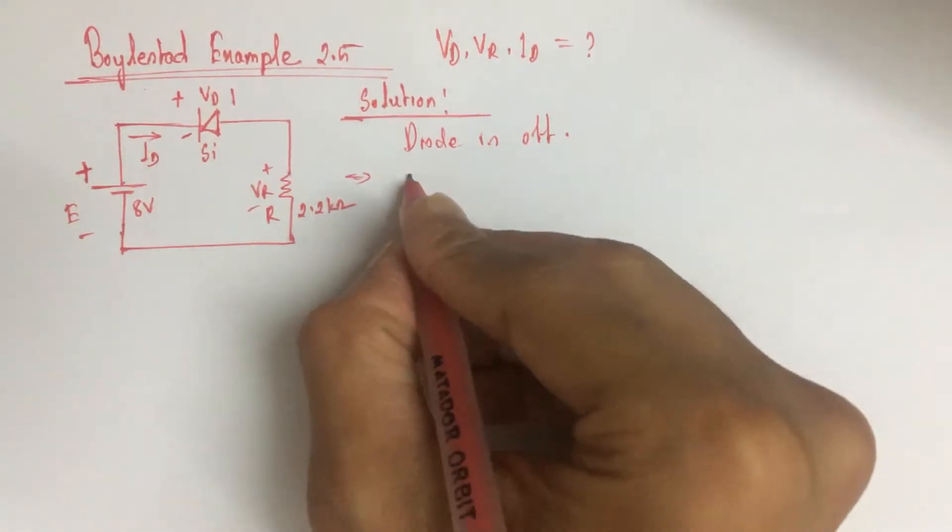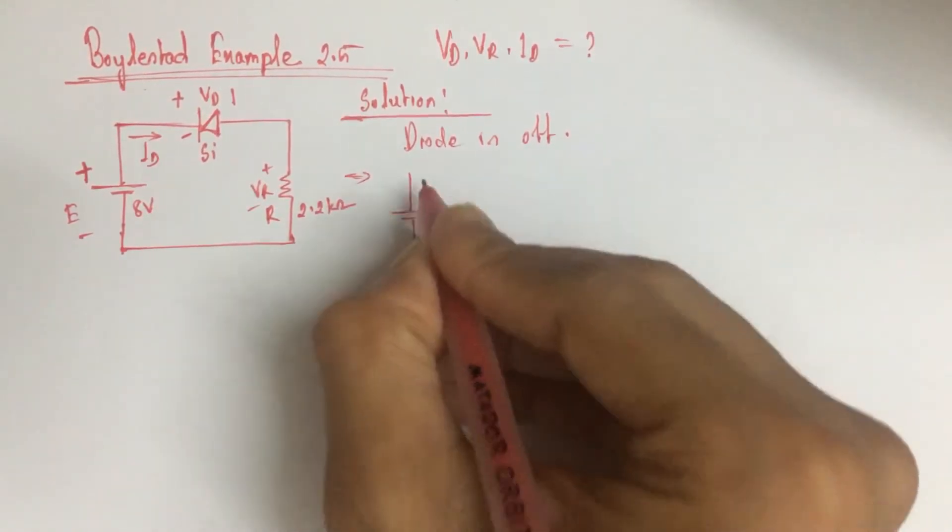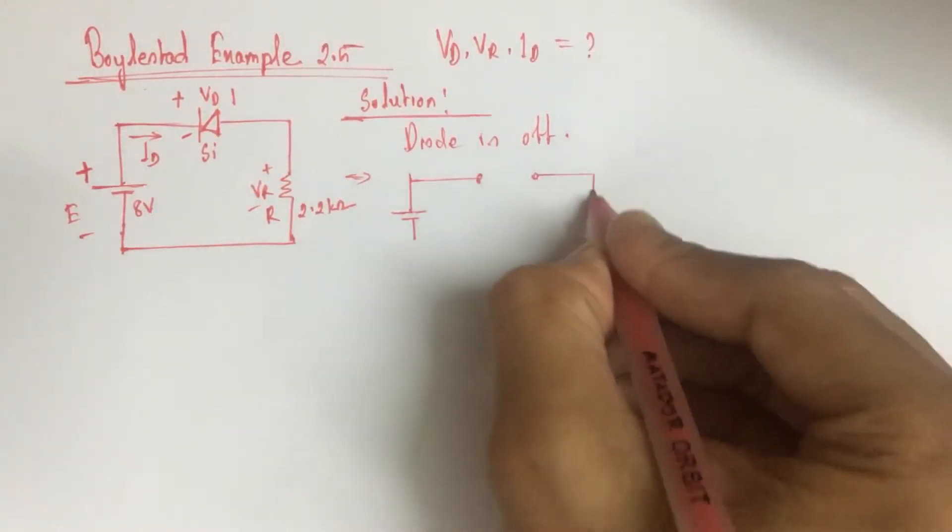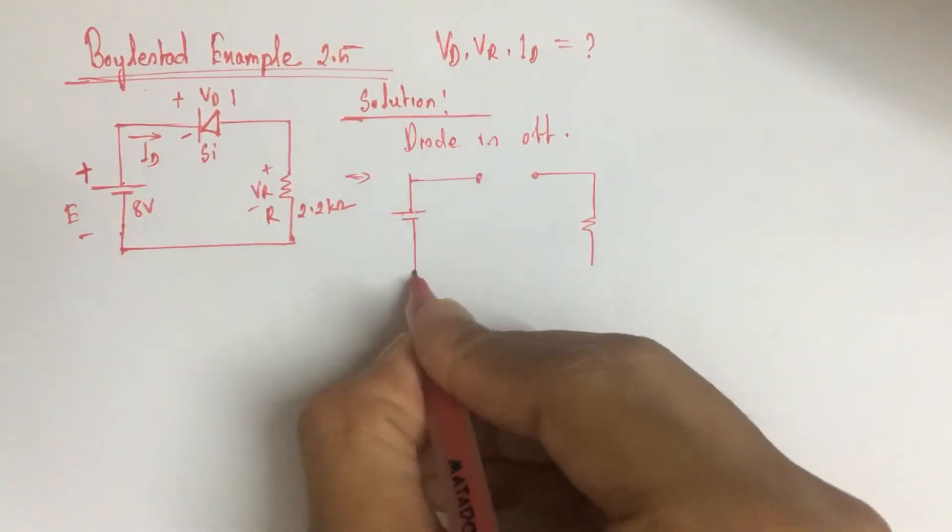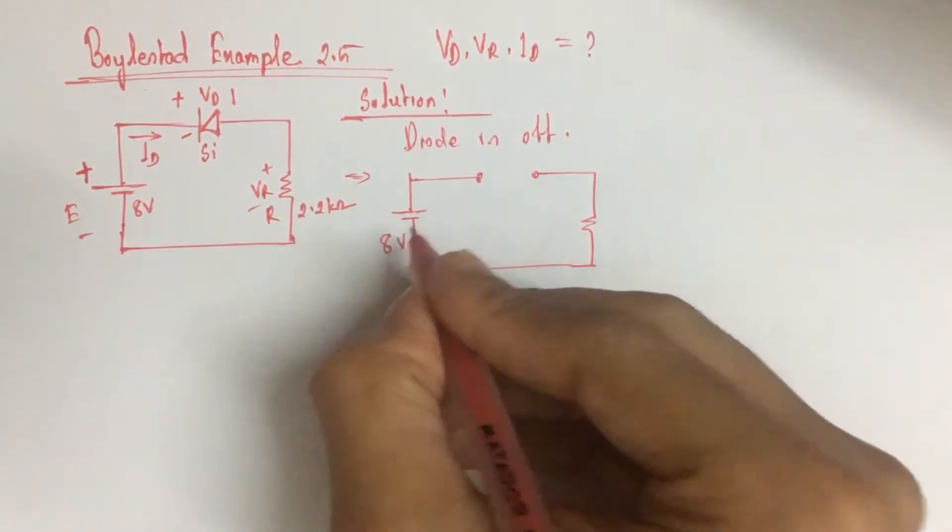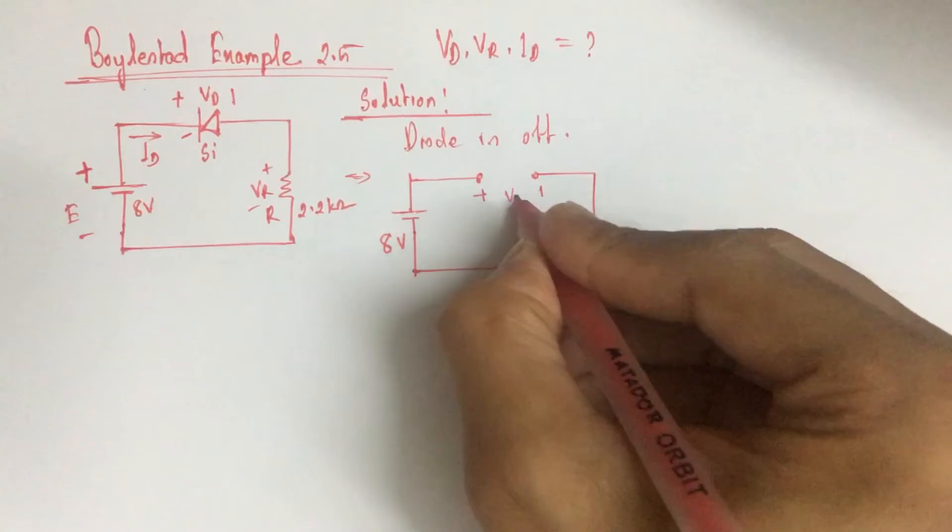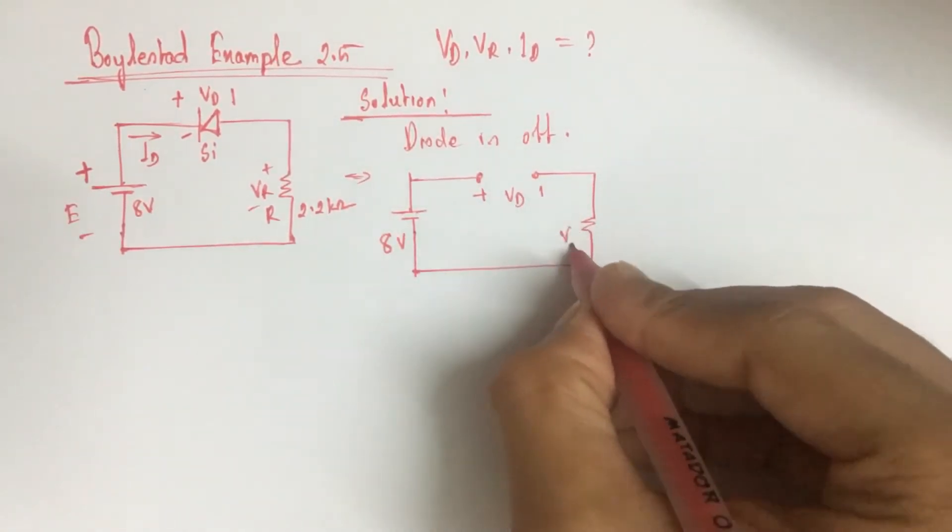If we redraw the equivalent circuit, then it will look like this is 8 volt, this is open VD, and this is VR.